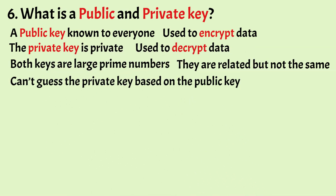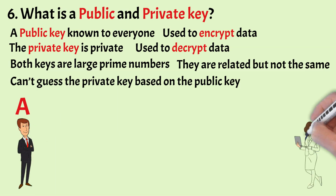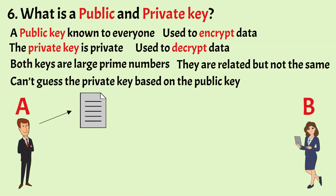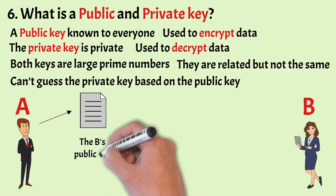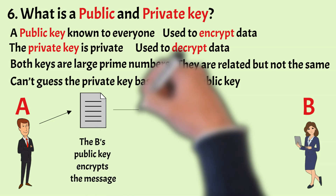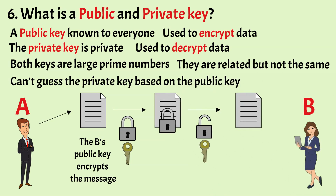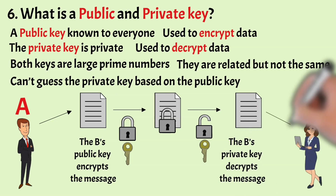Let's have an example of how public and private keys work. If A wants to send an encrypted message to B, he will take B's public key, encrypt his message, and send it to B. When B receives the message, he will use the private key that is known only to him and decrypt the message and read it.